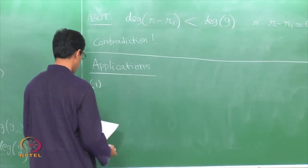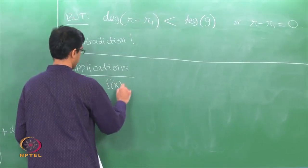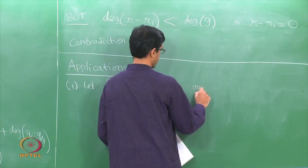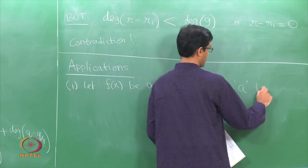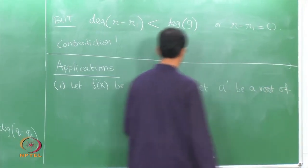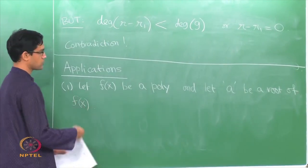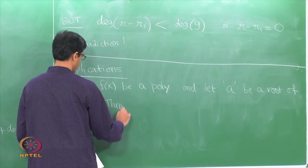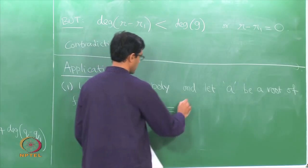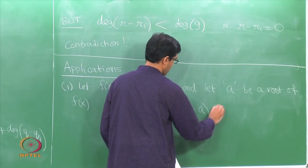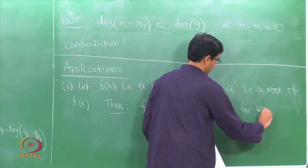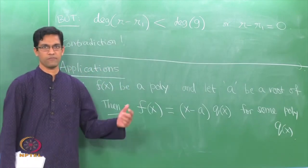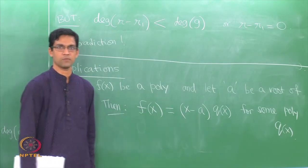Here is the first application of the division algorithm. Let f(x) be a polynomial and let a be a root of f(x) — a is a number, you could assume it is a real number or a complex number according to the case. If a is a root of f(x), then f(x) can actually be written as (x − a) times some other polynomial q(x) for some polynomial q.